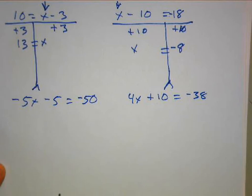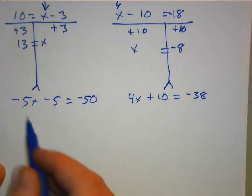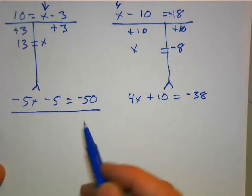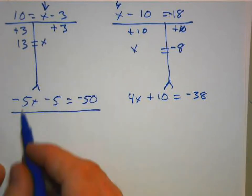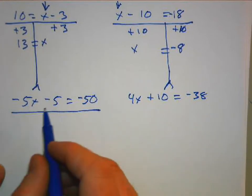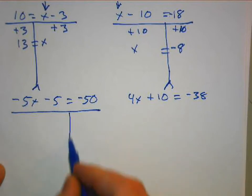Now our problem gets a little more complicated because it's more than just X equals. We got negative 5X minus 5 equals negative 50. So we're going to start with our teeter-totter again and draw our line down the middle there.